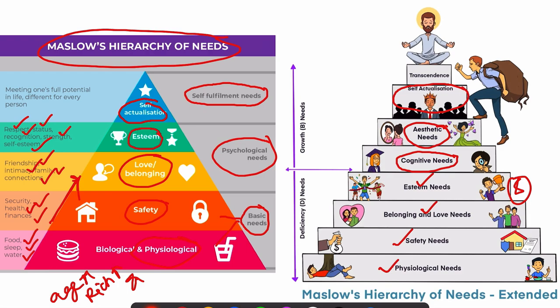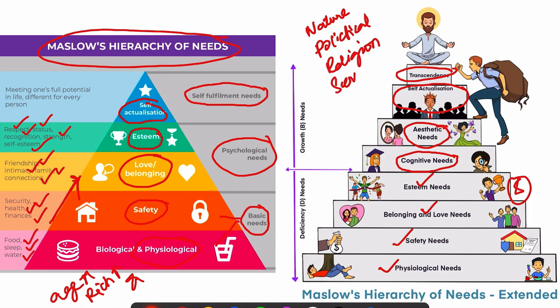If self-actualization is focused on individuals themselves, transcendence is a stage where individuals think about mystical experiences — like wanting to conserve nature, being oriented towards a political ideology, a religion, service to humanity for a particular cause, or exploring something in science. When they strive for such an ideology, that is called the transcendence stage or transcendent needs. We humans are at some stage focusing on these needs at different levels with different intensity.